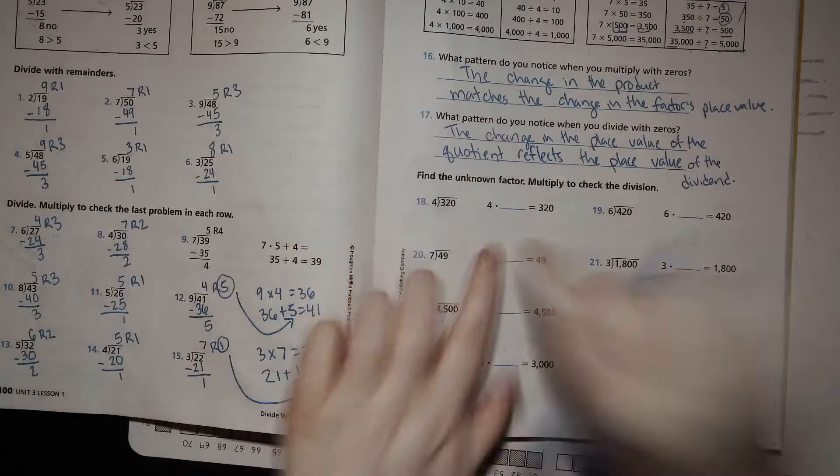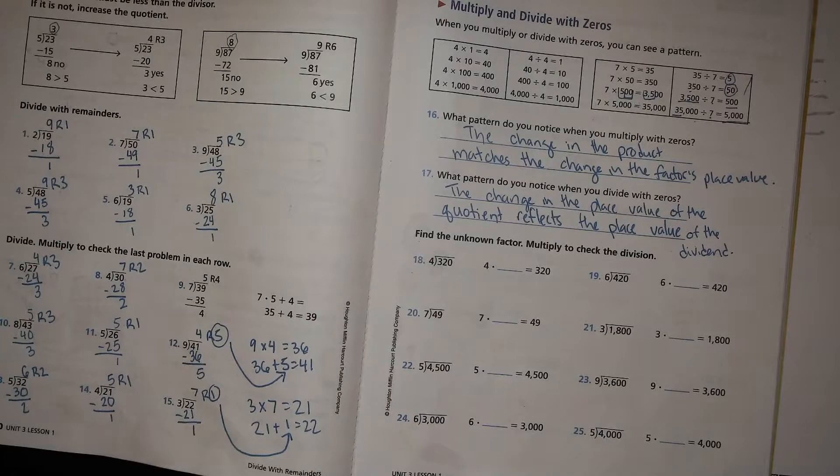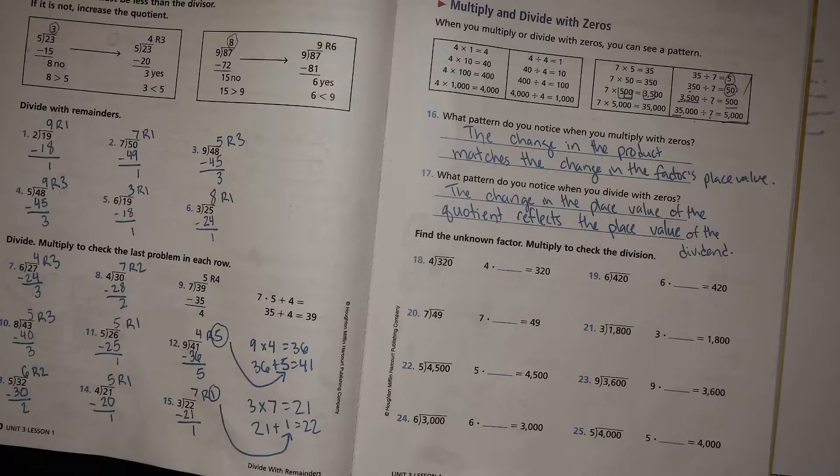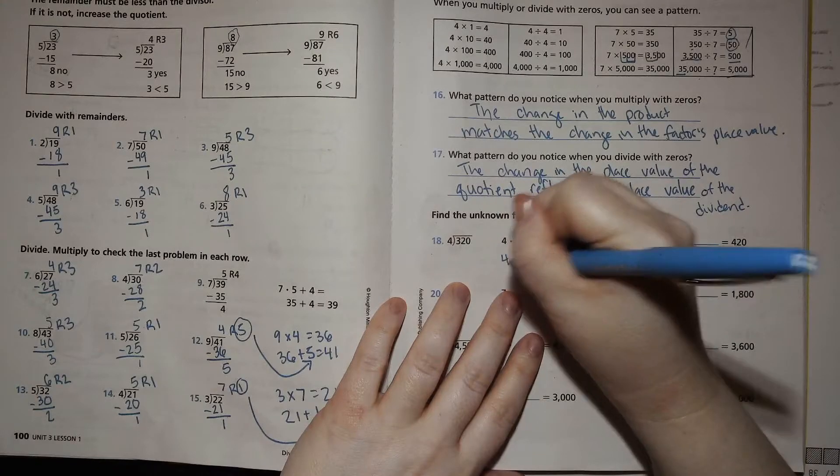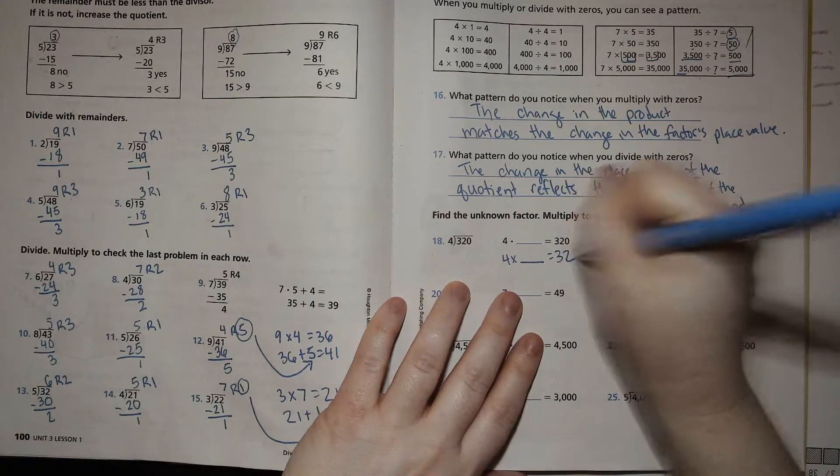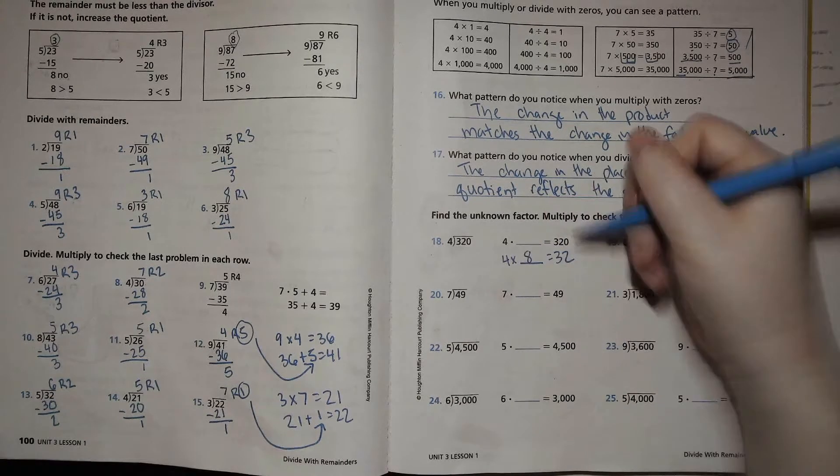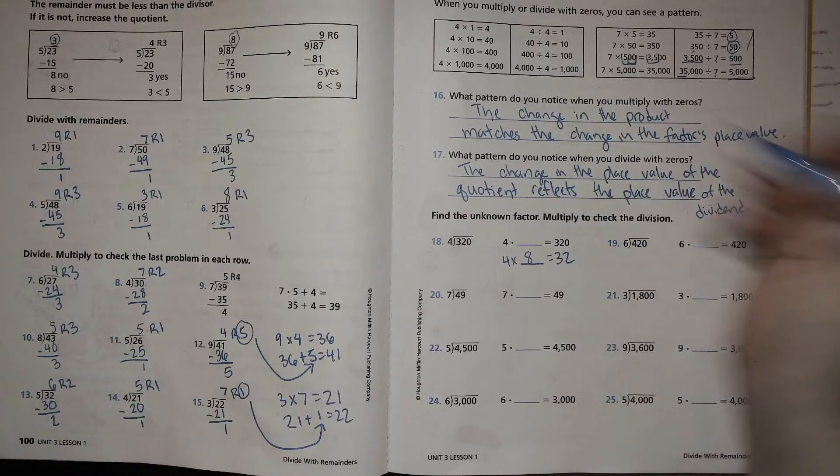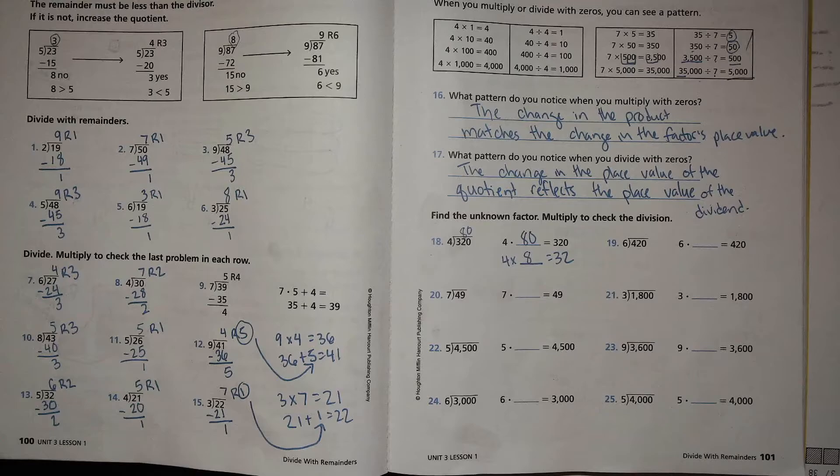All right. So let's go ahead and use that along with the math facts that we've been practicing to solve these problems. So 32 tens or 320 divided by 4. Well, I want you to think about 4 times what equals 32. 4 times what is 32? 8. So how are you going to get 32 tens? You need 8 tens. So 80.